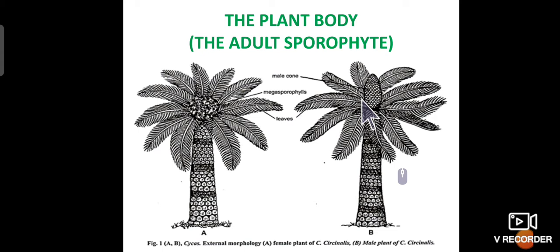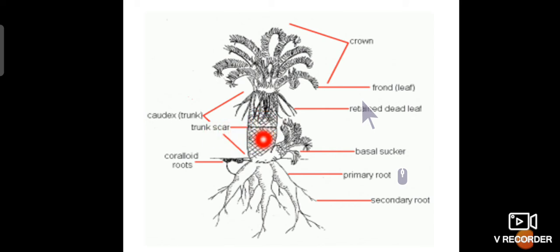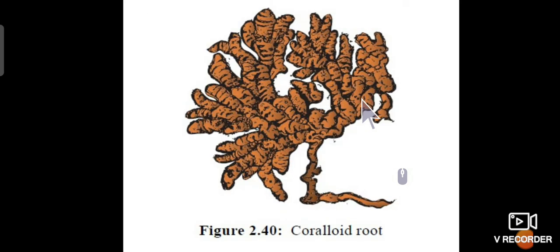Coming to the external features, let us talk about the root, stem, and leaf. In this diagram, the plant is differentiated into the primary roots and secondary root hairs. There are also other roots known as coralloid roots. The stem bears leaf base scars and a crown of foliage leaves, along with retained dead leaves. At the base there is a basal sucker, also known as bulbils.